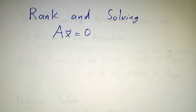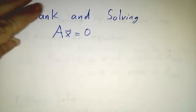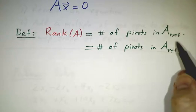In this video, we're going to talk about rank and about the solutions to Ax equals 0. The rank of a matrix is just the number of pivots you get when you put it in row echelon form or reduced row echelon form.